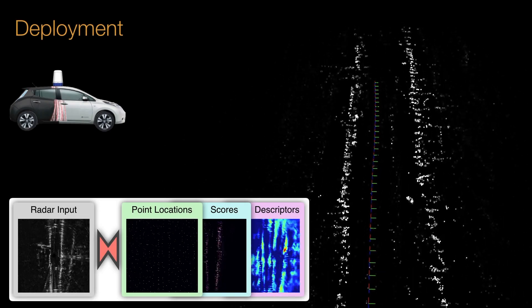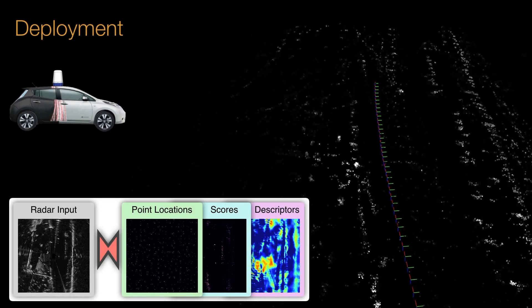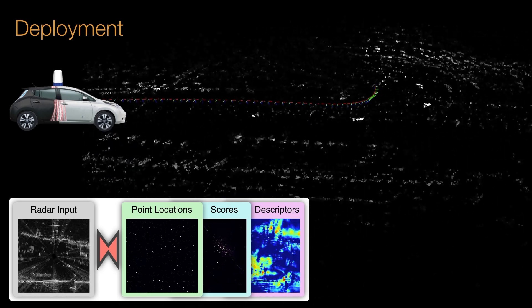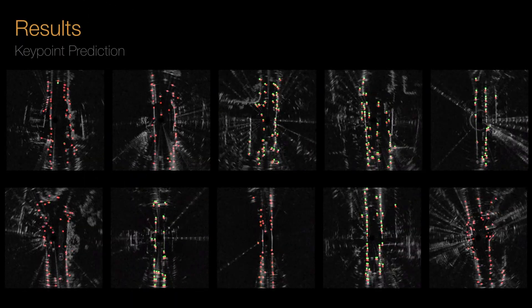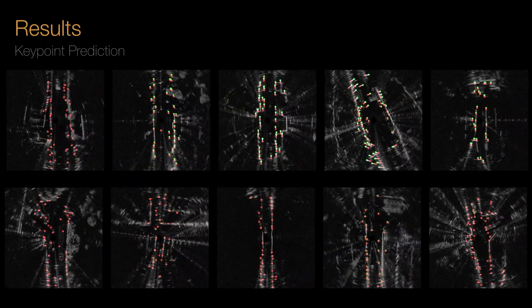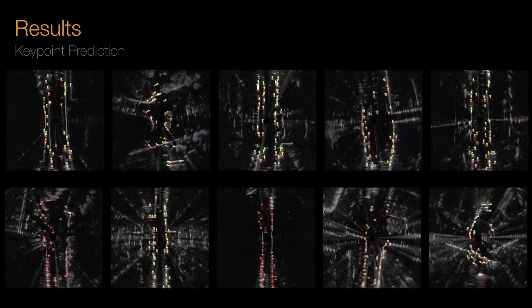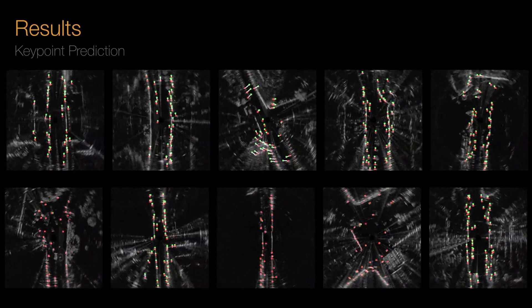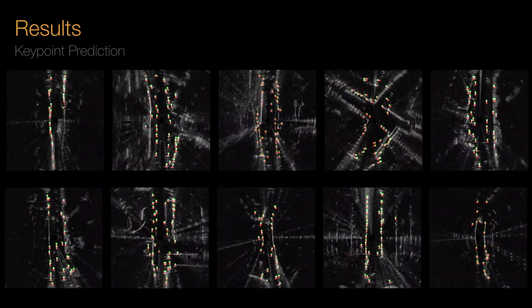At runtime, we take the trained network and predict keypoint locations, scores and descriptors from raw radar alone. Further visualising matches in odometry, we can see that in all conditions, the point locations and weights accurately capture the vehicle motion and are well localised to objects such as walls and buildings suitable for odometry estimation.